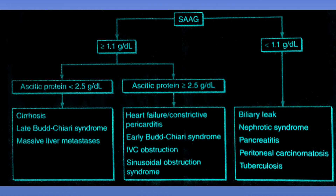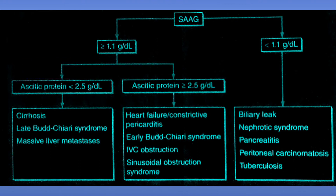Coming back to the portal hypertension causes — based on ascitic protein levels, we can further divide them into exclusive hepatic causes and non-hepatic causes. If ascitic protein is less than 2.5 g/dL, it indicates that hepatic sinusoids have been damaged and are no longer allowing the passage of protein. This occurs with cirrhosis, late Budd-Chiari syndrome with severe hepatic congestion, and massive liver metastasis. In these conditions, the hepatic sinusoids are damaged and cannot allow protein passage into the ascitic fluid.